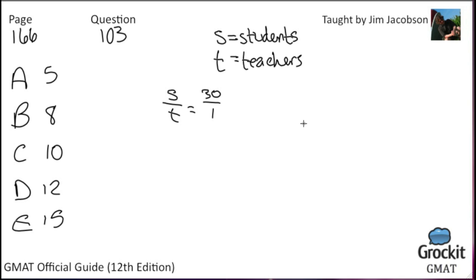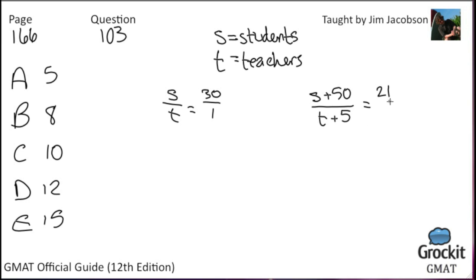We'll use T for our teachers. The ratio of students to teachers — remember you can write ratios as fractions — so S to T is the same thing as S over T. S over T equals 30 to 1. We also know that if student enrollment goes up by 50 and teachers go up by 5, the ratio changes. So S plus 50 over T plus 5 equals 25 to 1. We have two equations and two variables, which means we can solve. We're after the number of teachers, so we're trying to solve for T.